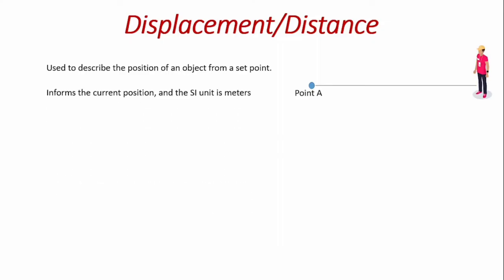Another concept to quickly look at is displacement and distance. It's used to describe the position of an object from its set points, and it informs the current position. The SI unit is in meters. So displacement or distance is used to tell where something or an object is positioned currently from a set reference point.